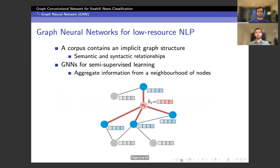Now, to move on to where we bring graph neural networks into this picture. We do this by viewing a corpus as having an implicit graph structure where both semantic and syntactic relationships can be represented in a graph. And these relationships exist both within a document and between documents in our corpus. And we're particularly interested in viewing the corpus in this light because graph neural networks are really good at semi-supervised learning.